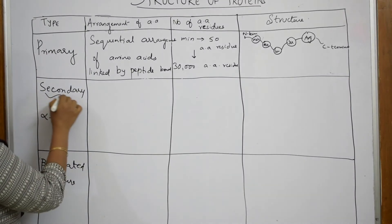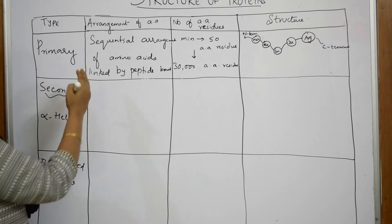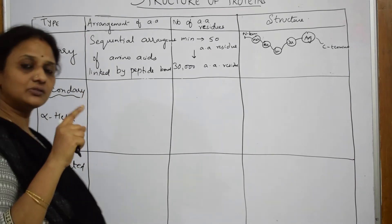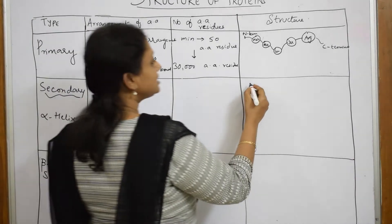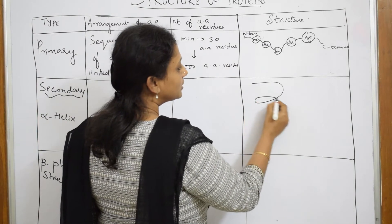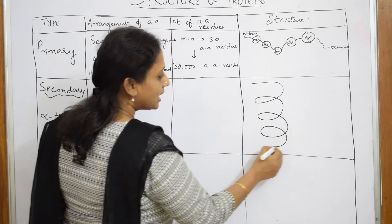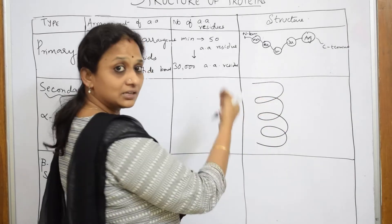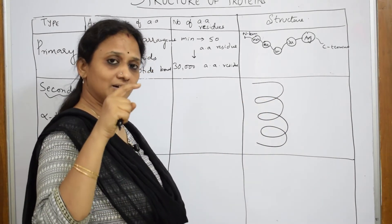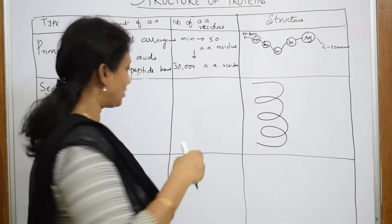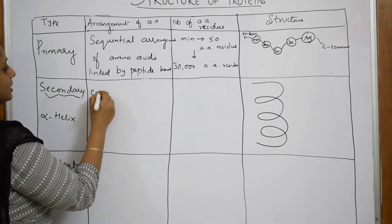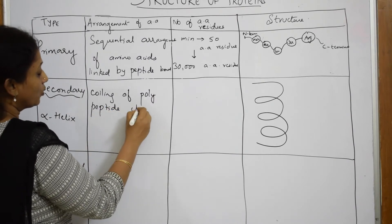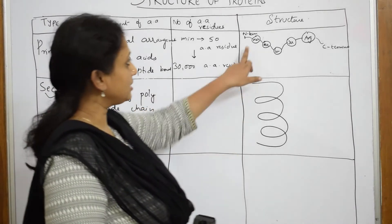In the secondary structure, the protein chain no longer stays as a straight chain. Instead it folds up. In the alpha helix, the protein chain folds in the form of a right-handed helical structure — it starts coiling into a coiled polypeptide chain.